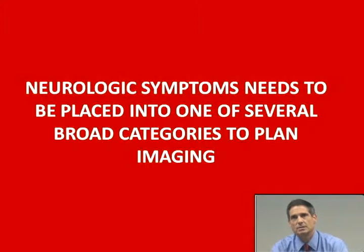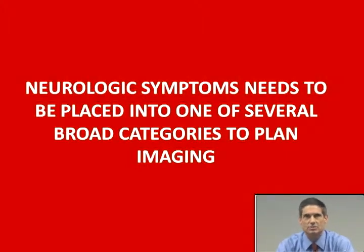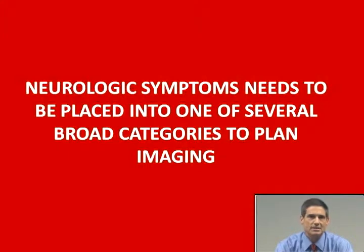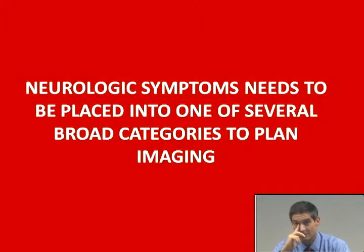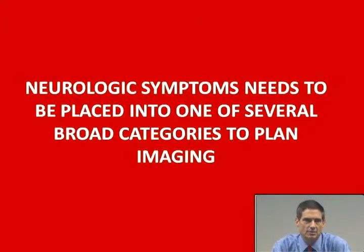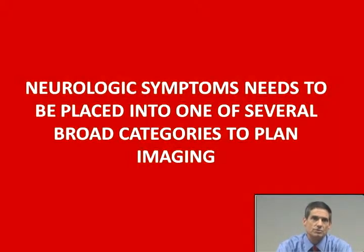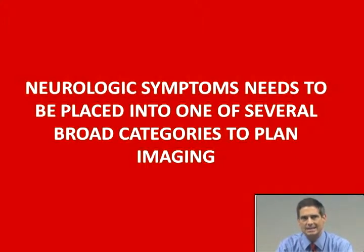The first point: neurologic symptoms need to be placed into one of several broad categories to plan imaging. As a primary care practitioner you'll see many patients with a neurological abnormality or symptom. Some may have an obvious diagnosis — an acutely hemiplegic patient from a stroke, or a patient with tonic-clonic movements and a known diagnosis of epilepsy. Other clear-cut symptoms include likely abnormalities of the cranial nerves, which I'll discuss in a separate lecture — things like anosmia, double vision, visual field cuts, and hearing loss.